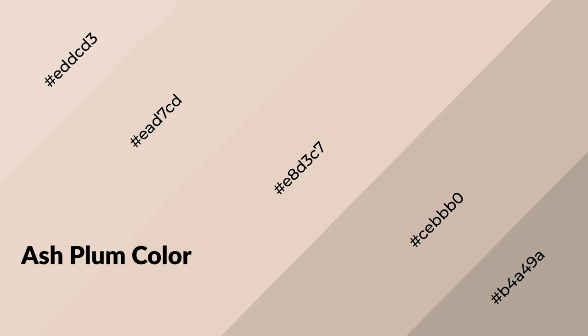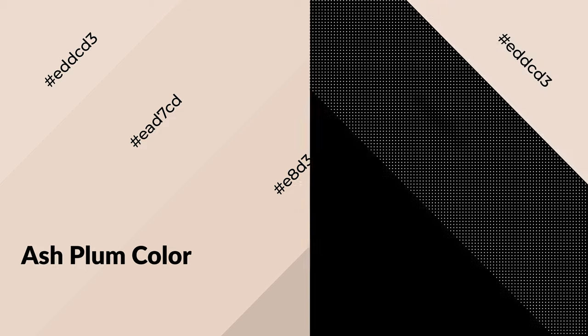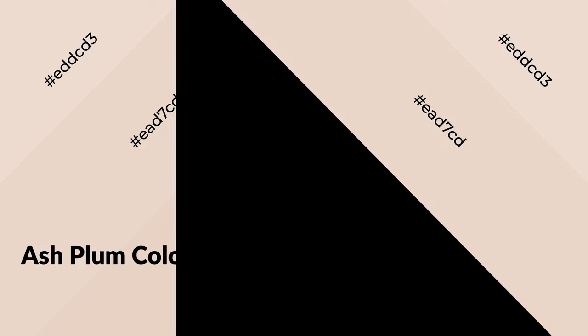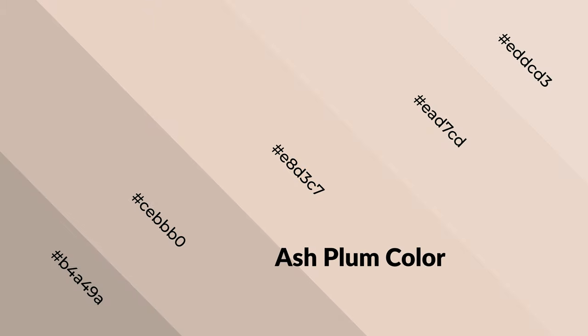Ash plum is a warm color and it emits cozier and active emotions. Warm colors are symbols of warmth, fire, heat, and sunshine. It also evokes joy, passion, love, and even anger. You can see warm colors used in restaurants and gyms.